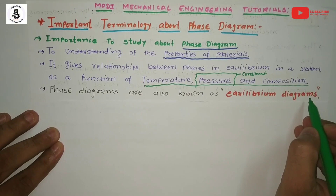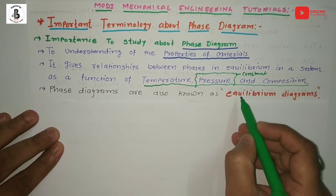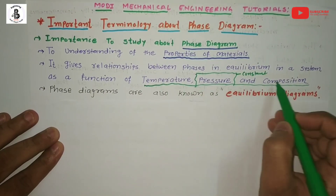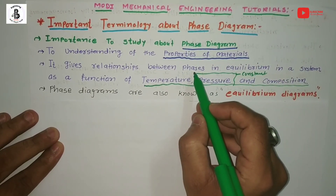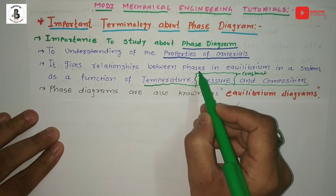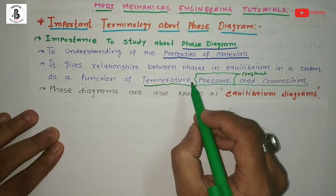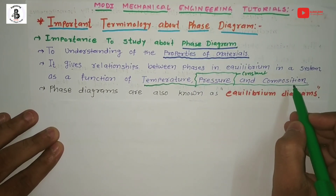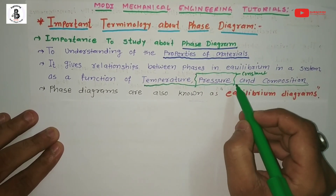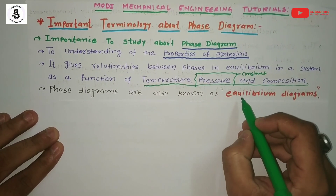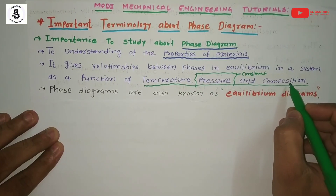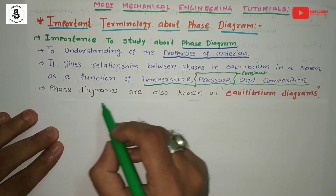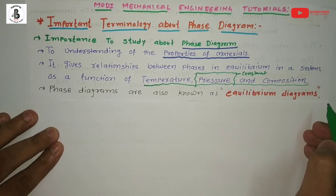Phase diagrams are also known as equilibrium diagrams. This is because at different set of conditions of temperature and composition, different phases exist. By heating and cooling, a number of phases exist at different conditions of temperature and composition at constant pressure. This representation of different phases with respect to temperature and composition is known as a phase diagram or equilibrium diagram.